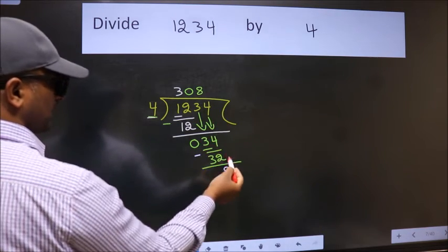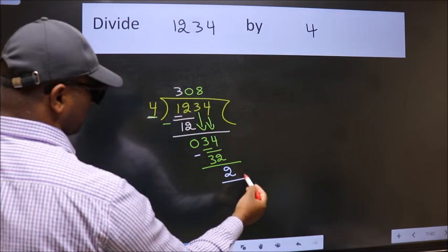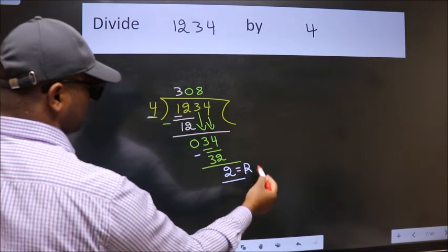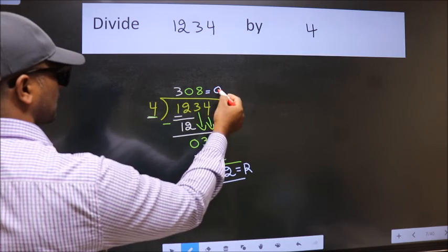No more numbers to bring down, so we stop here. This is our remainder, and this is our quotient.